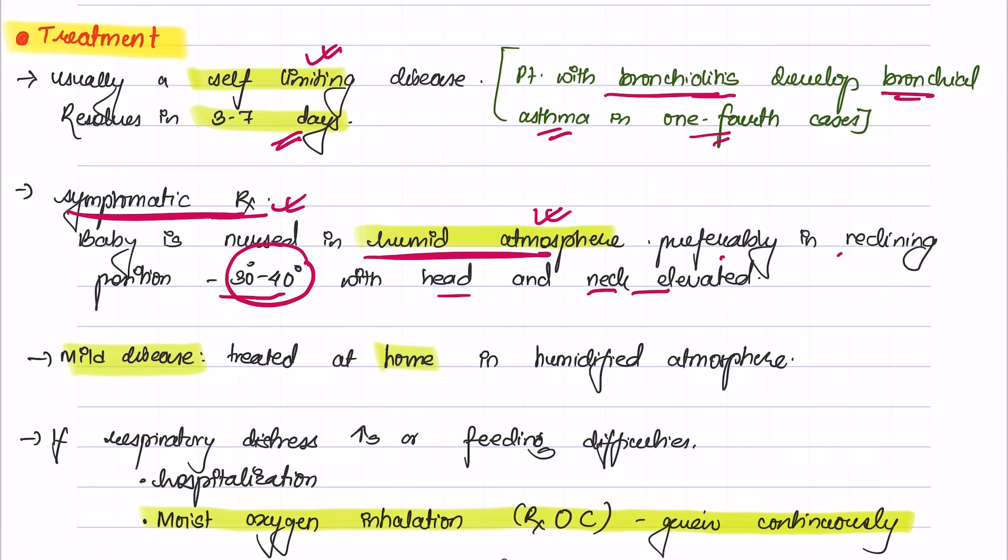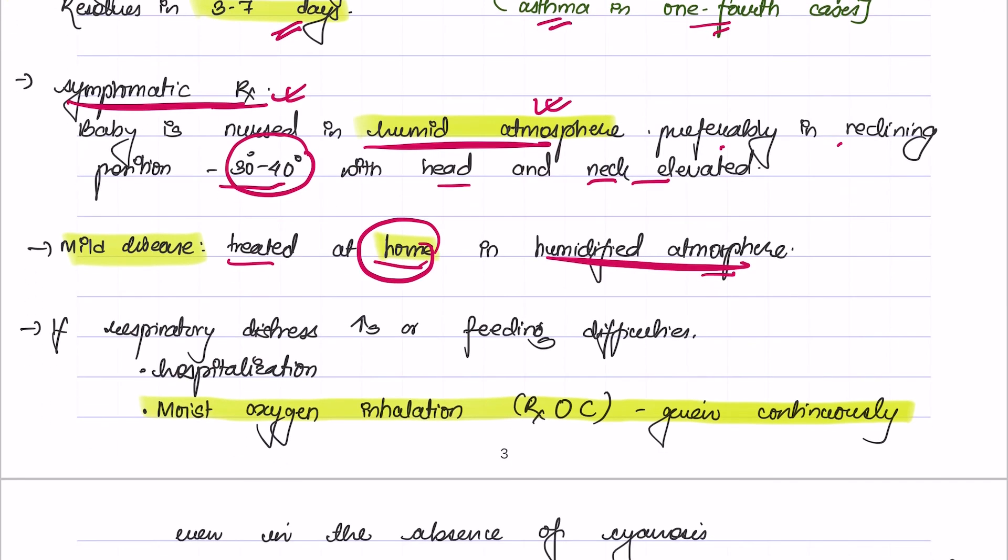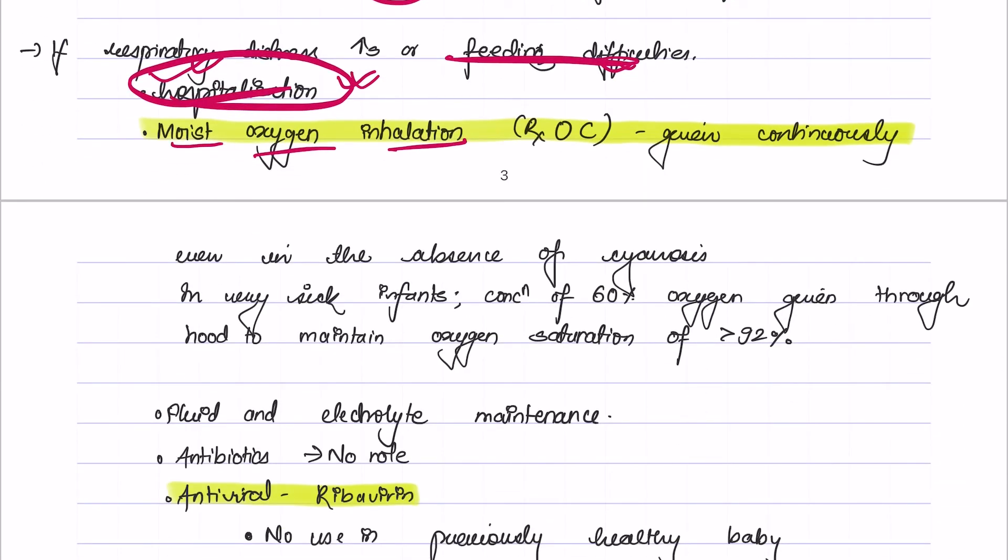For mild disease, they are treated at home in humidified atmosphere. But if the child develops severe signs of respiratory distress or develops feeding difficulties, then the child should be hospitalized. The treatment of choice is moist oxygen inhalation. Oxygen is given even in the absence of cyanosis. For very sick patients, a concentration of 60% oxygen is given through the hood to maintain oxygen saturation of more than 92%.